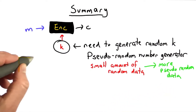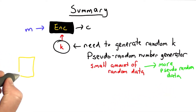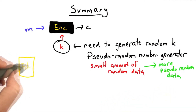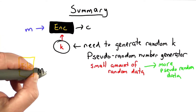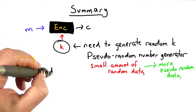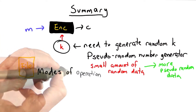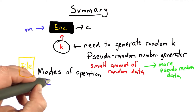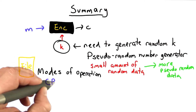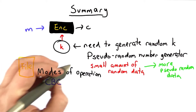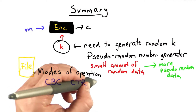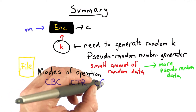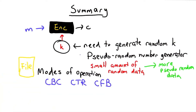We also looked at the problem of how to encrypt a large file or a large message, and that brought us to look at modes of operation for using symmetric ciphers. We talked about the cipher block chaining mode, the counter mode, and the cipher feedback mode, all of which have different advantages and disadvantages.